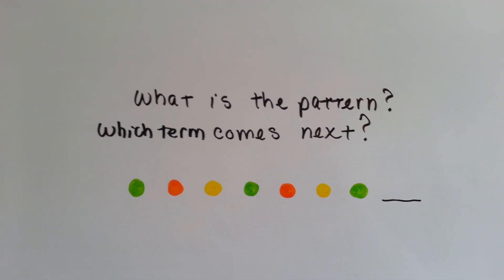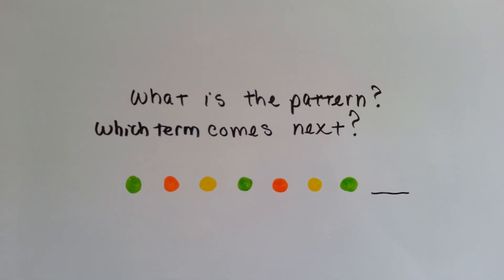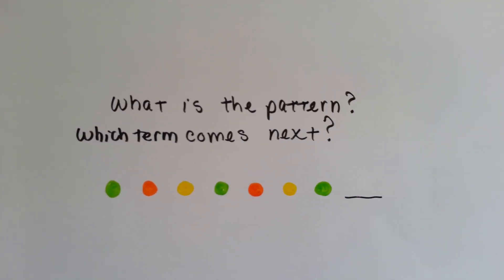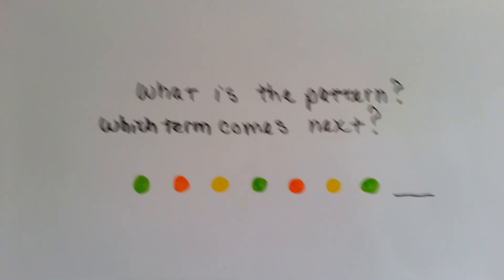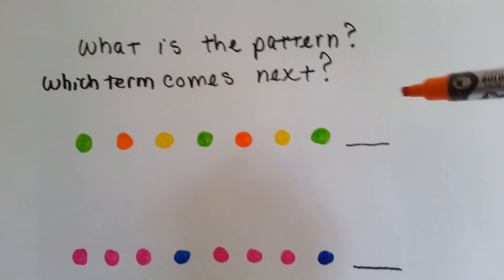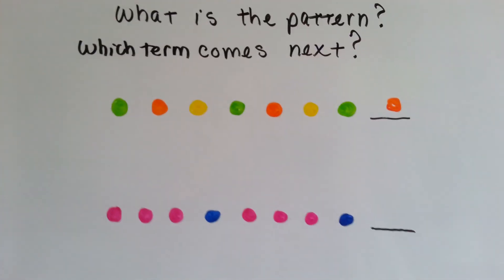It's a green circle, orange circle, yellow circle, green circle, orange circle, yellow circle, green circle. What do you think is next? What is the next term? Well, this one's not that hard. You should be able to get this one, okay? The next one should be an orange circle, okay?